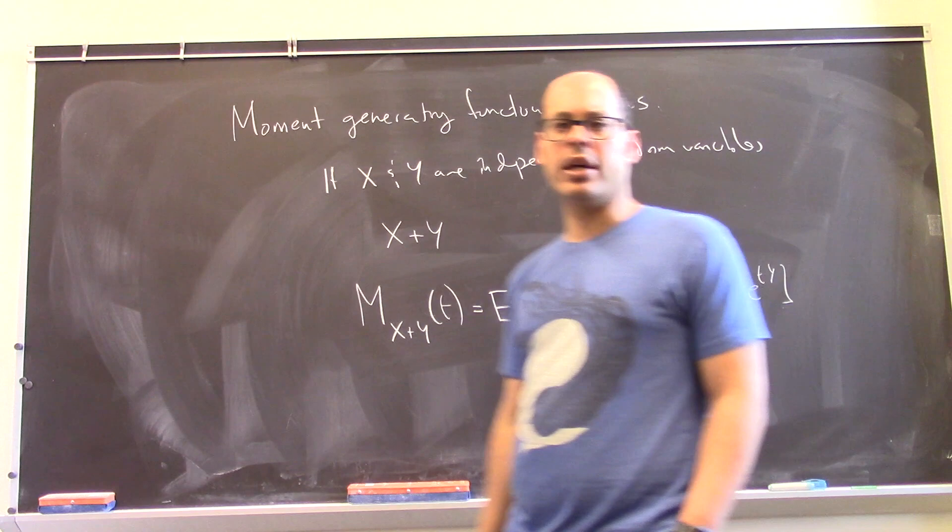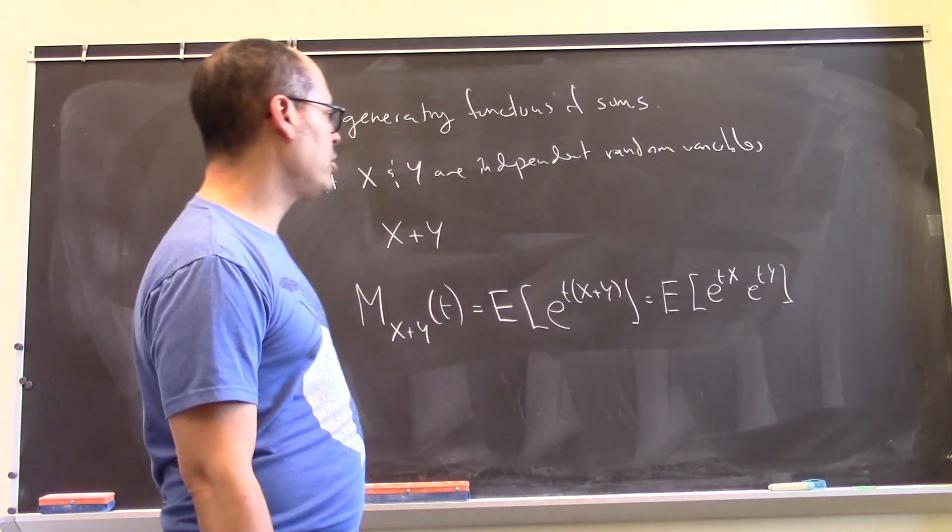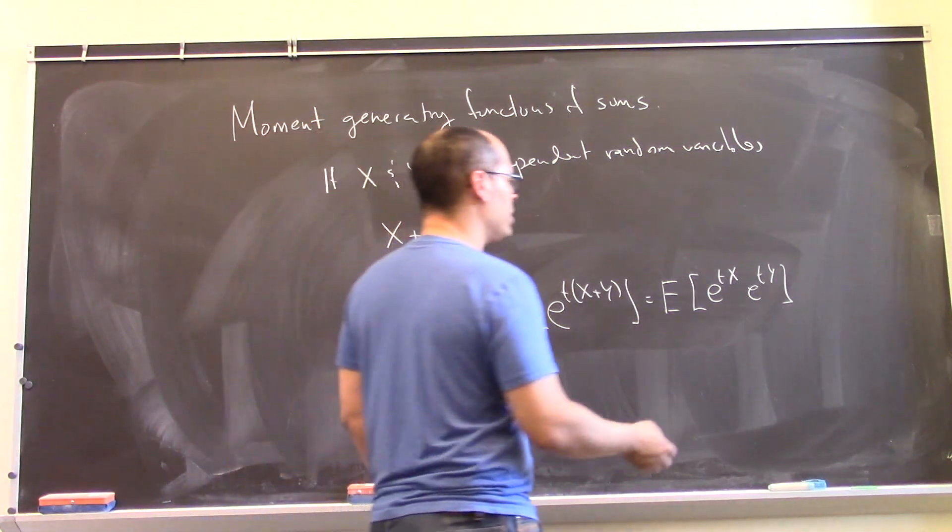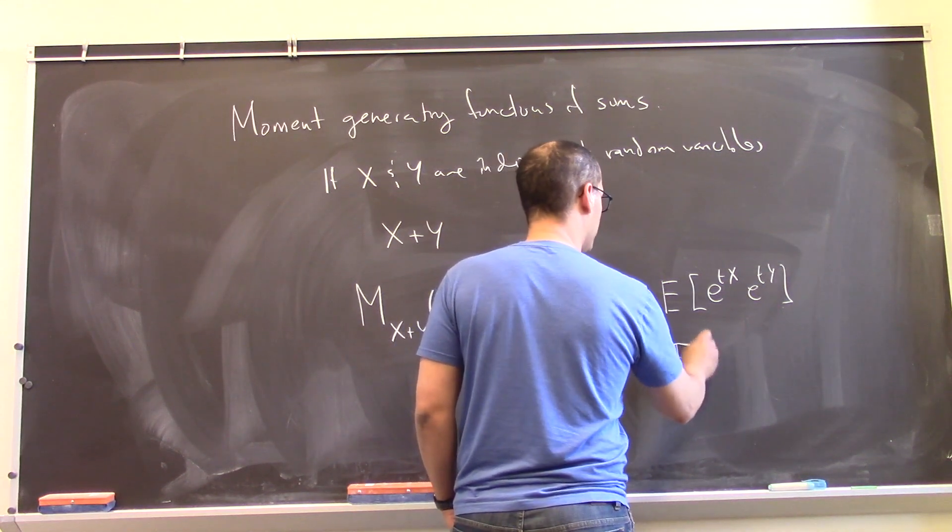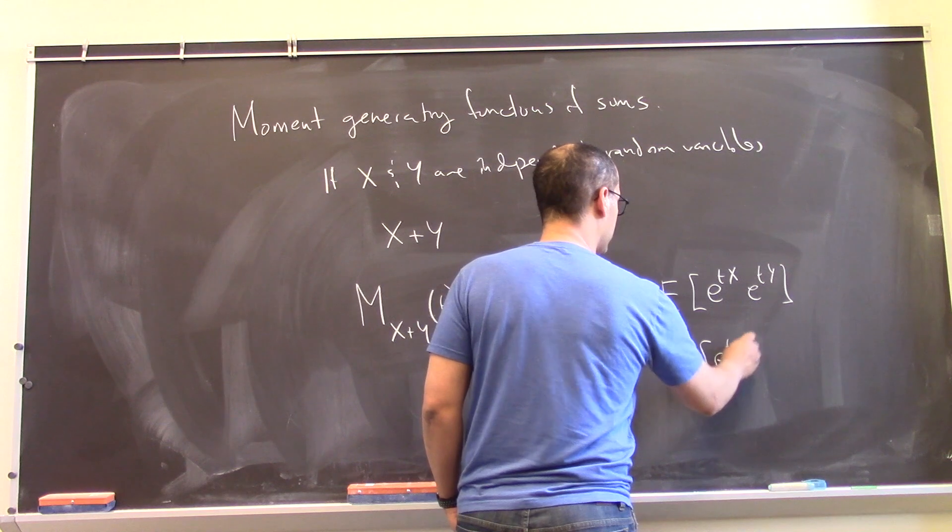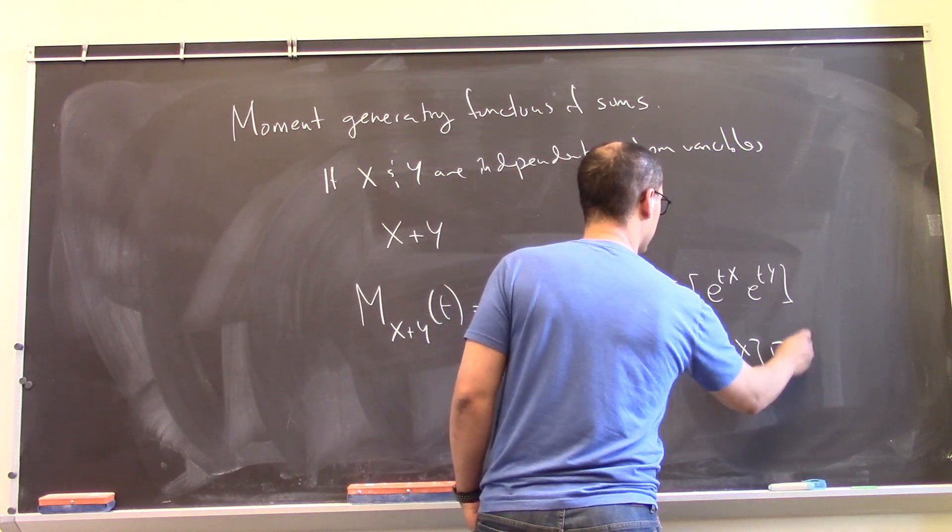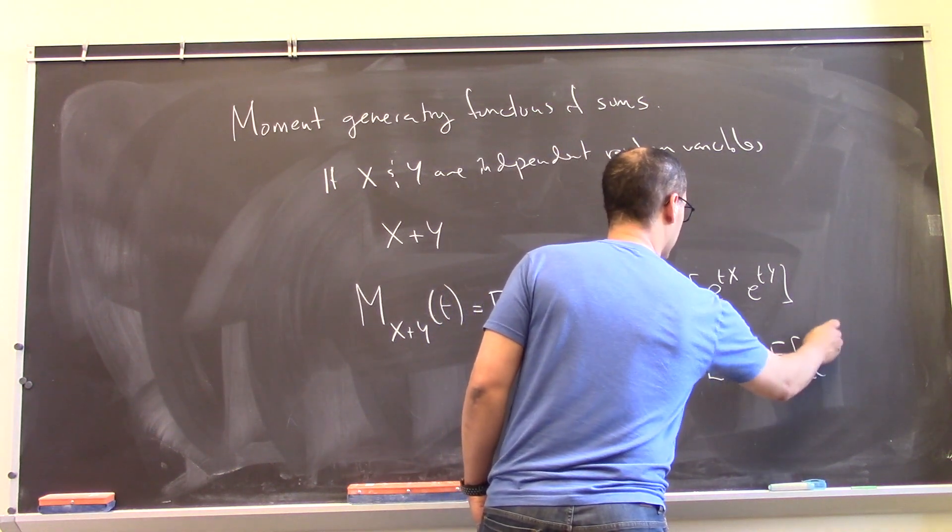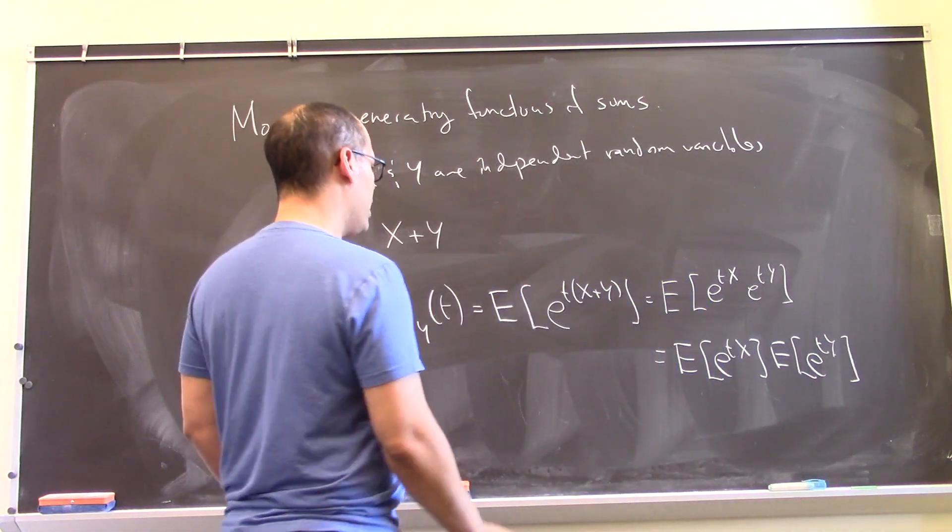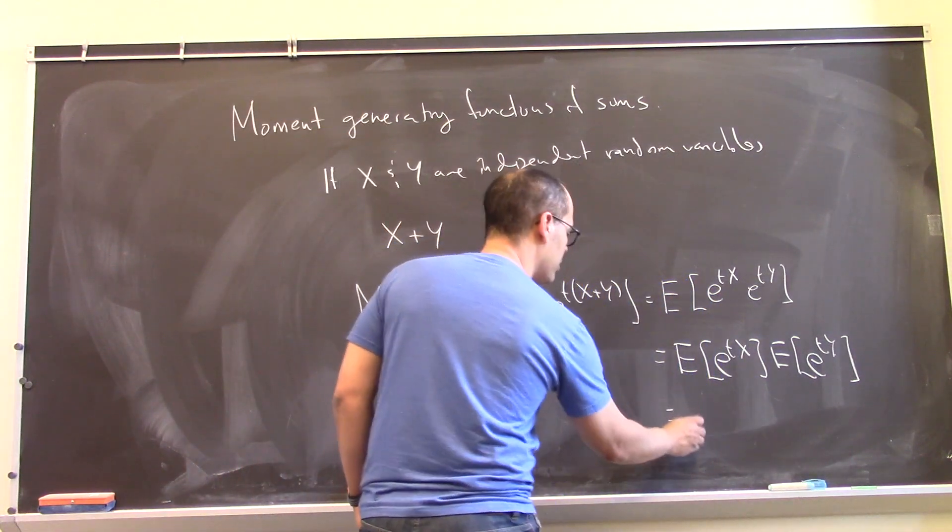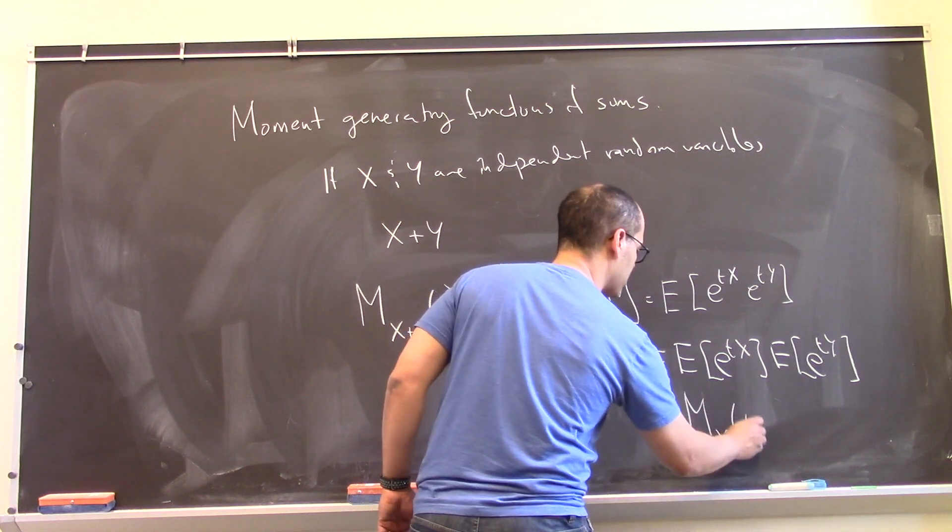Now, if x and y are independent, then we can actually break up this expected value of a product into a product of expected values. This is the expected value of e to the t x times the expected value of e to the t y. And so what we find is that this is equal to the product of the two moment generating functions.